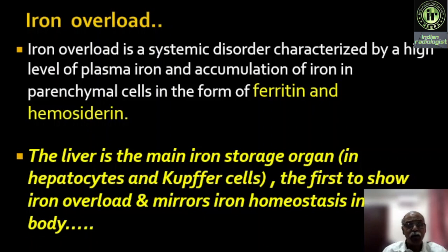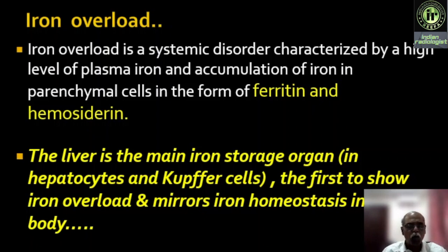The greatest advantage of MRI is that the liver is the main iron storage organ. In the liver, iron is stored in hepatocytes, and if they get saturated, it then comes to Kupffer cells or the reticuloendothelial system. Importantly, the liver is the first to show iron overload status in the entire body and mirrors the iron homeostasis in the body. That is why in all conditions of primary and secondary iron overload, quantifying liver iron will automatically tell you about iron homeostasis in the body — the entire iron metabolism.